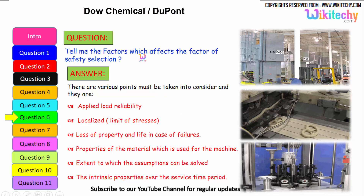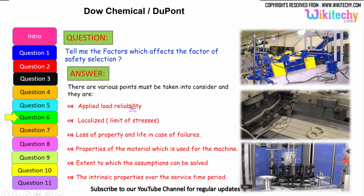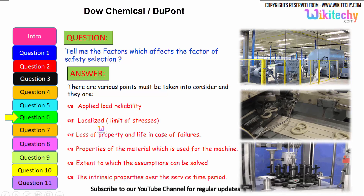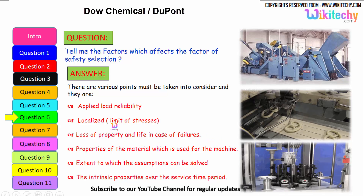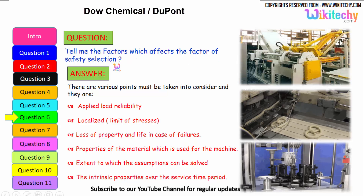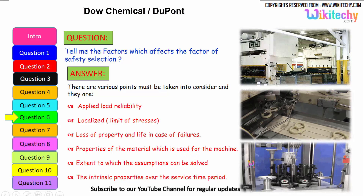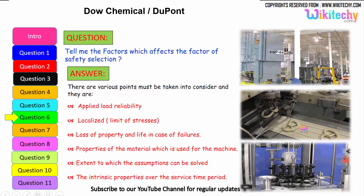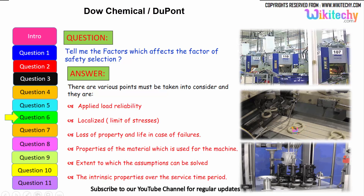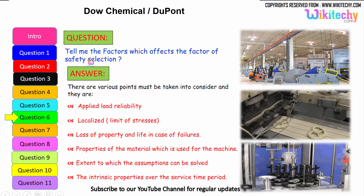Let us see the factors which affect the factor of safety selection. These include: reliability of the applied load, stress limits and localized stresses, loss of property and life in case of failure, properties of the material used for the machine, the extent to which assumptions can be validated, and the intrinsic property of the material over the service time period.